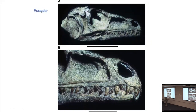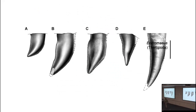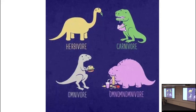Eoraptor's face shows some teeth are ziphodont — blade-like — while some are a little broader and better for chopping plants. Compared to that, the oldest theropod dinosaur co-occurring in the same time and space has purely carnivorous teeth. So yes, these early sauropodomorphs were omnivores.